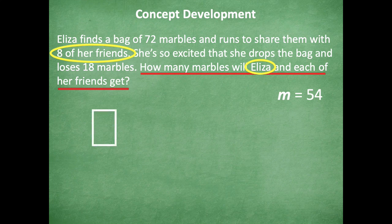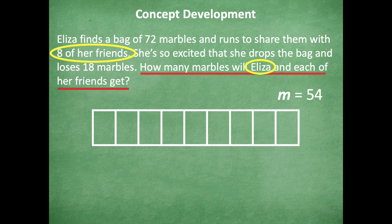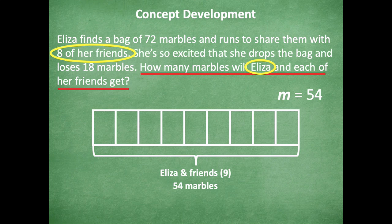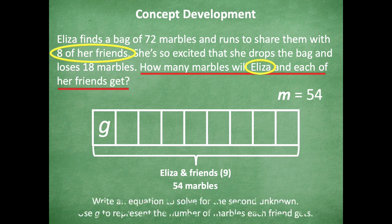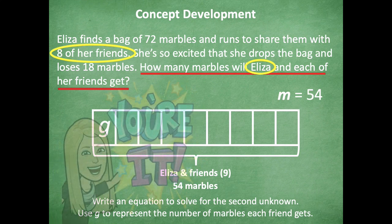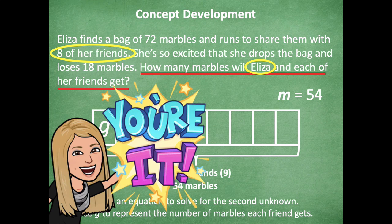Here's what I came up with. On my tape diagram I show nine friends — Eliza and her eight friends equal nine total: one, two, three, four, five, six, seven, eight, nine. The total is 54 marbles. I label each section g because that's how much each friend is getting — that's my unknown for this part. Now write an equation using g to represent the number of marbles each friend gets — a division sentence with 54 marbles and nine friends. Solve and write g equals, then click play.